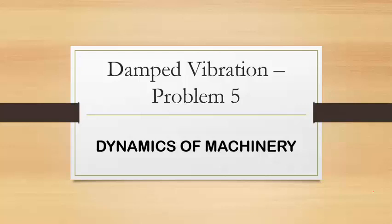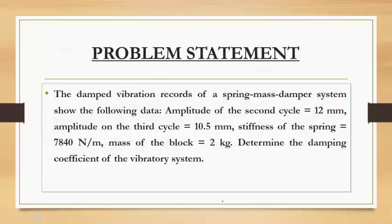Dear students, let us discuss a problem on damped vibration. The damped vibration records of a spring-mass-damper system show the following data: amplitude of the second cycle X2 is 12 mm, amplitude of the third cycle X3 is 10.5 mm, stiffness of the spring S is 7840 N/m, and mass of the block M is 2 kg. It is asked to determine the damping coefficient of the vibratory system.